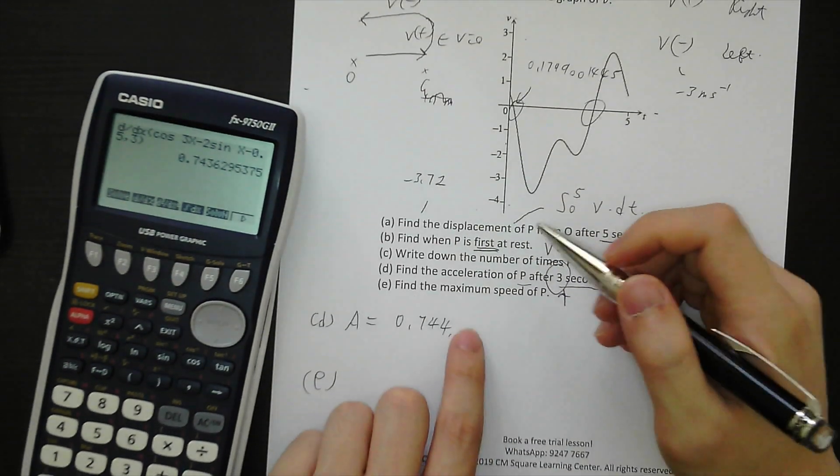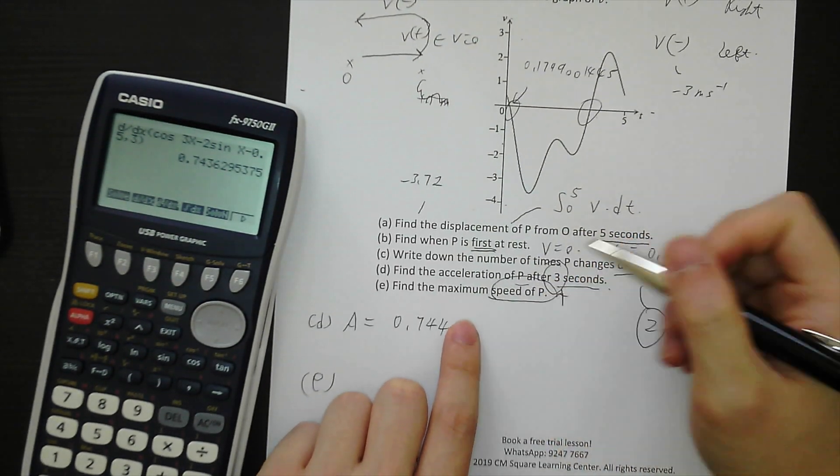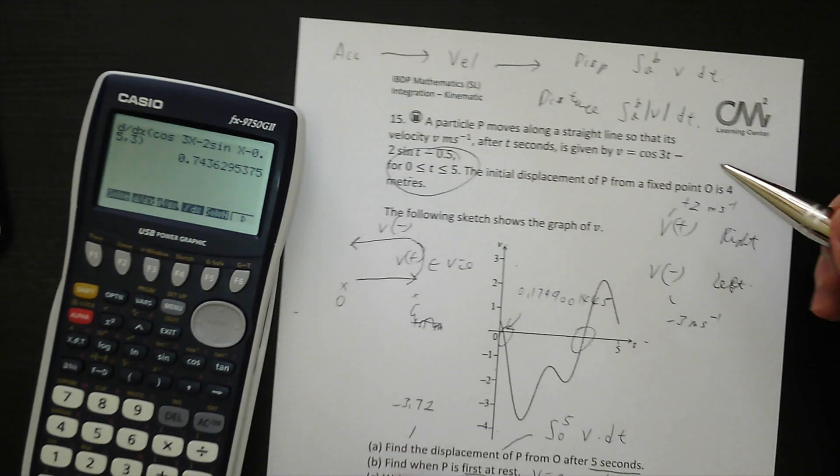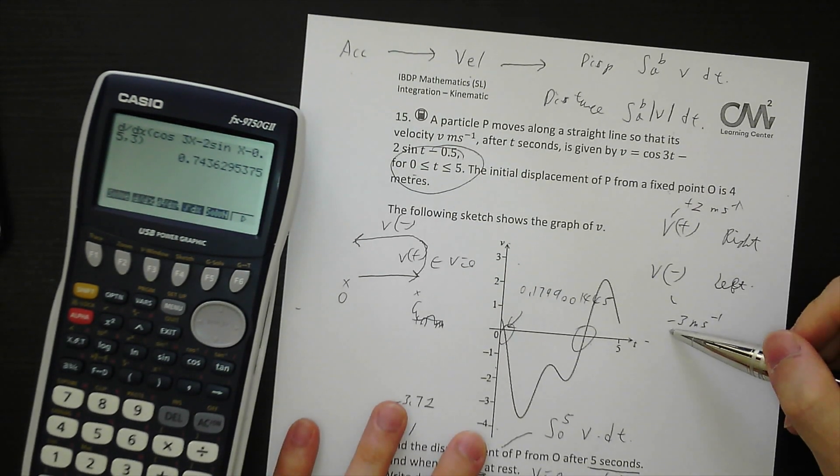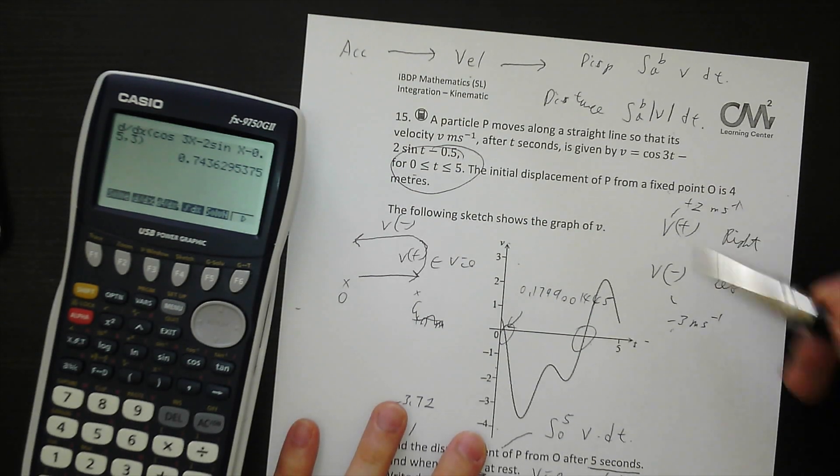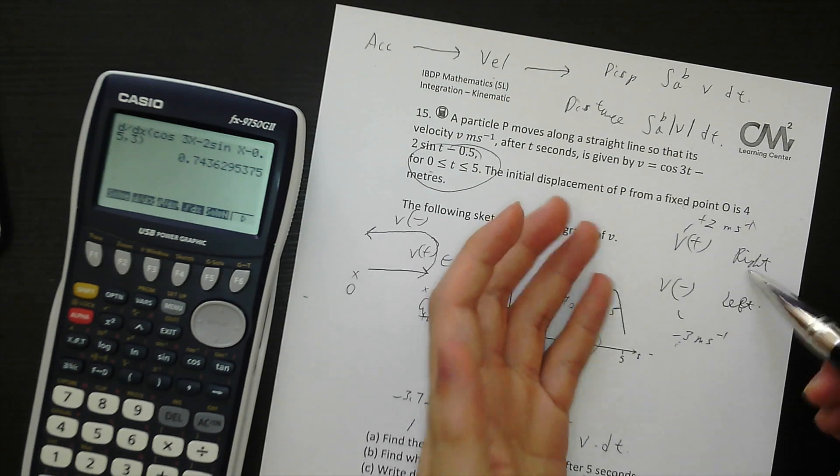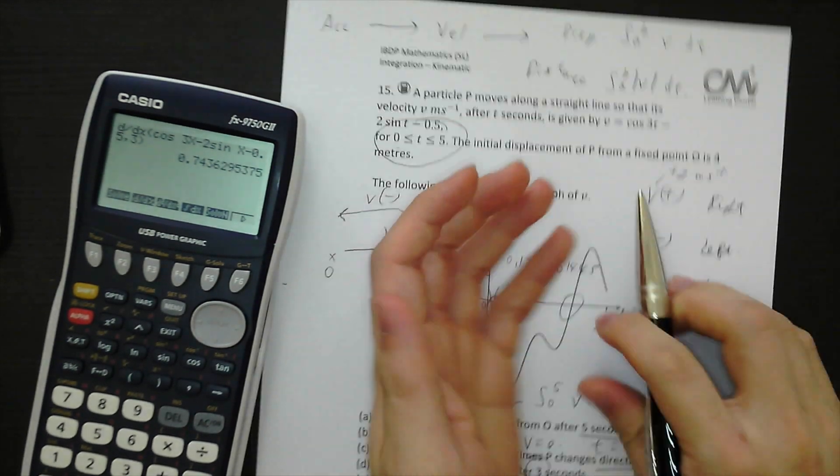And last part, part E. Find the maximum speed of P. So what's the difference between speed and velocity? Just take this example. Velocity with sign positive and negative with direction. Positive going to right hand side, negative going to left hand side. But for speed, it's without sign. It's just the speed at that moment.